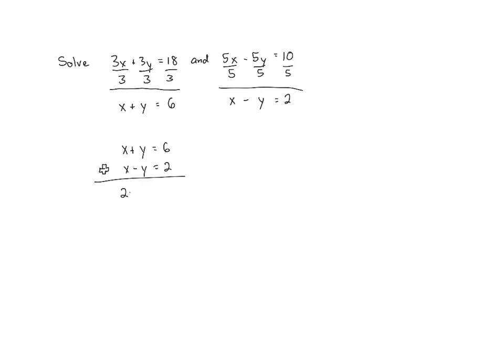x plus x is 2x. The y's cancel. The y's are eliminated. And then 6 plus 2 is 8. So we've got 2x equals 8. If we divide by 2, that gives us x equals 4.